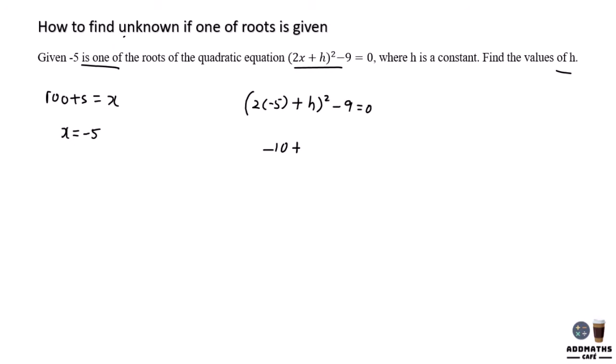So you know that (-10 + h)² - 9 = 0. Negative 10 plus h, square.